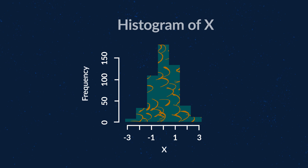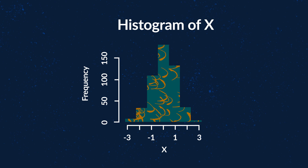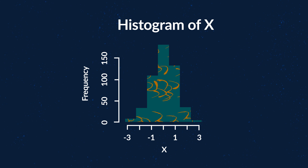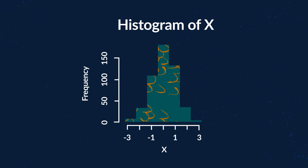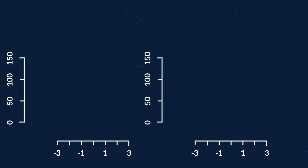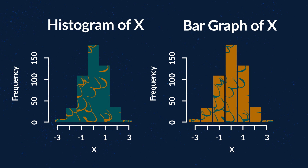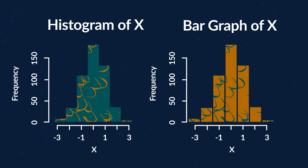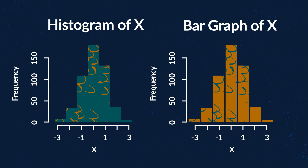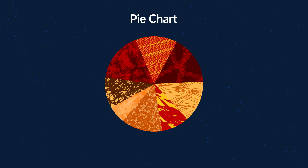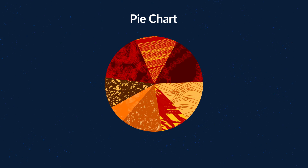Another tool that can be used is a histogram — another way in which researchers display data. Histograms are bar graphs that show frequencies through vertical columns. These are very similar to bar graphs; however, the key difference is that in a histogram, the bars are not separated by space, while a bar graph does have space between each of the bars. Lastly, researchers could display data in a pie chart, where data is divided up into different sections of a circle, each representing a portion of the whole.